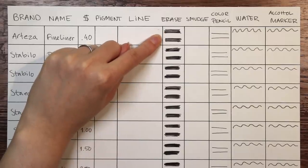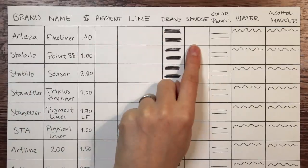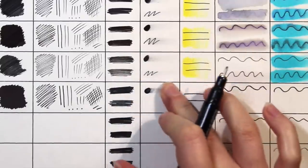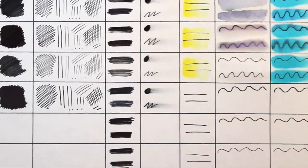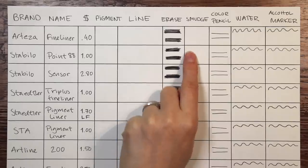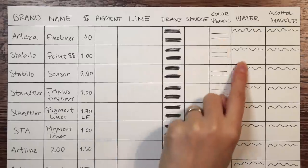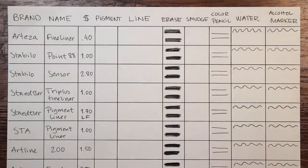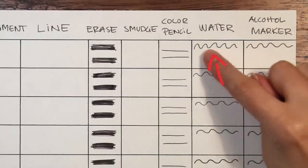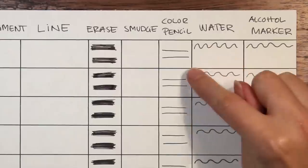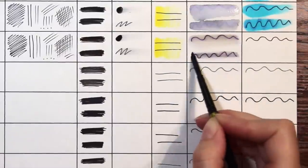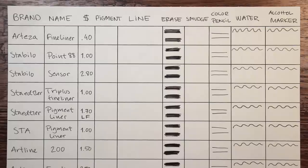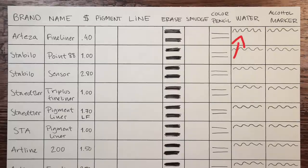I made two bars to have a control one. I will do a smudge test to see how likely it is to smear the ink with your hand while you're drawing. And I will also test out the pens with different mediums to see how well they work with color pencils, watercolors and alcohol marker ink. I will test the water and alcohol on both a pre-made dry ink line but also on a fresh one that I will make right before adding the water or alcohol.